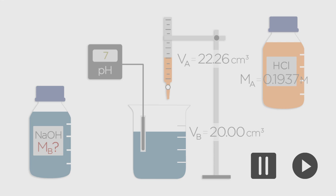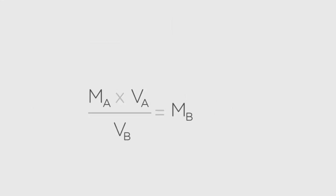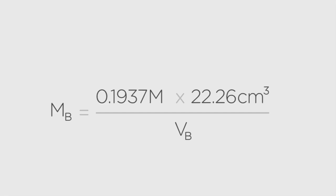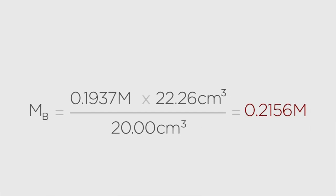Here's how you rearrange the equation to find MB. And now we just pop all our values in. So the precise molarity of our sodium hydroxide is revealed to be 0.2156 molar. How did you do?